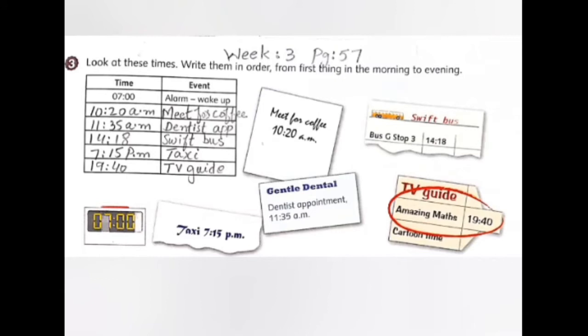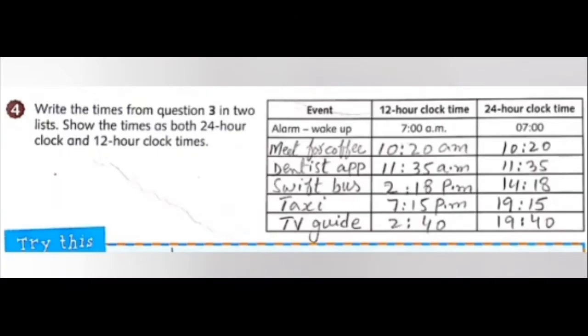In this exercise, we have different events with their times and a chart with time and event. We have to write the times with their events starting from morning to evening. First, we will write down the morning time, then the evening time. It's book work.